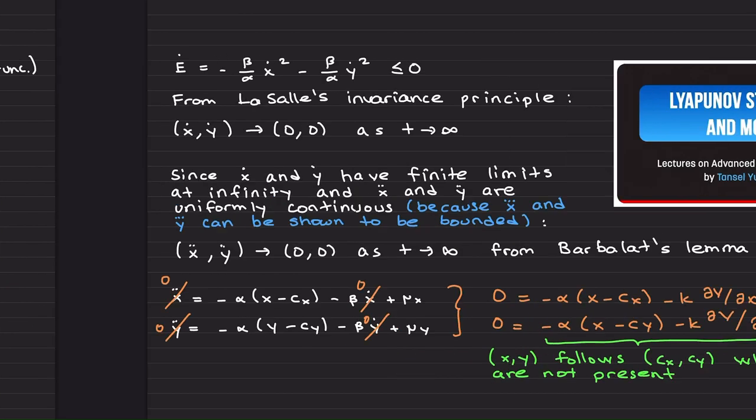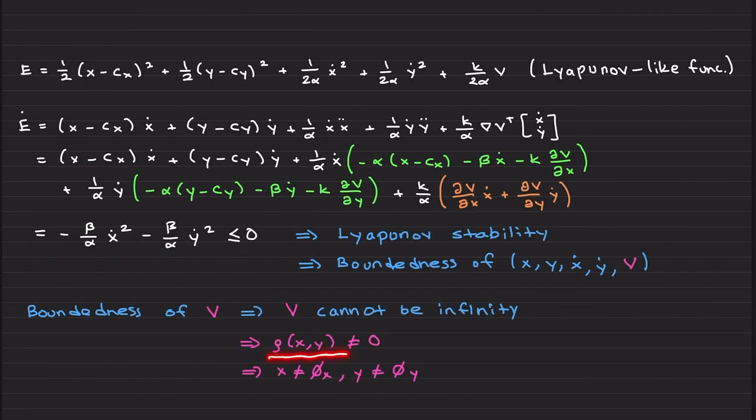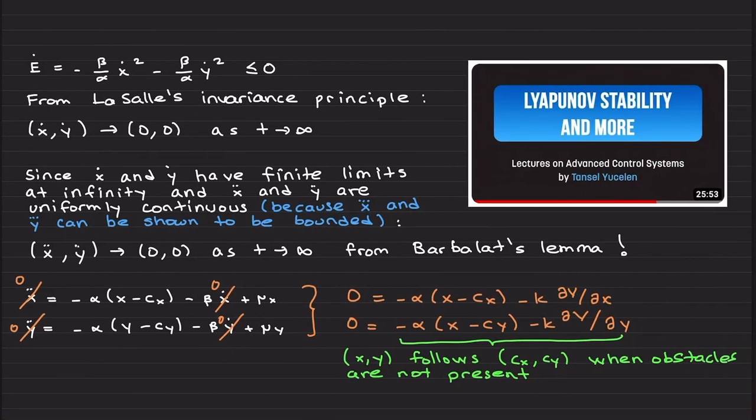This implies that ẍ and ÿ are uniformly continuous. Now from Barbalat's lemma—again, to learn from Barbalat's lemma, check this video—ẍ and ÿ terms go to zero as t goes to infinity.